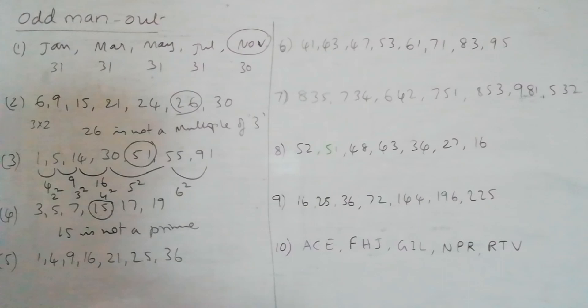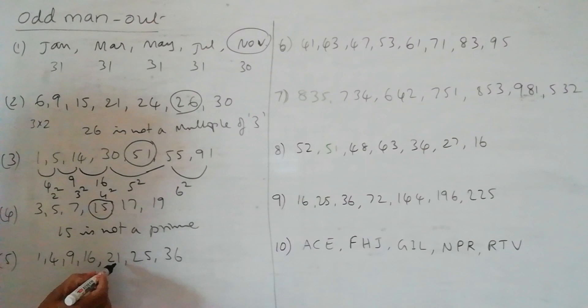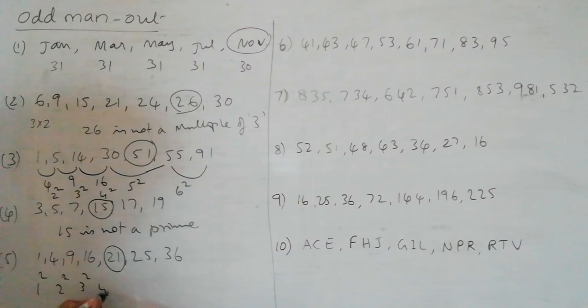Next, in the other problem we have 1, 4, 9, 16, 21, 25, 36. So if you observe except this particular number, all remaining numbers are perfect squares. 1 square, 2 square, 3 square, 4 square, 5 square, 6 square.